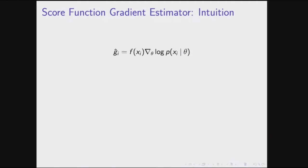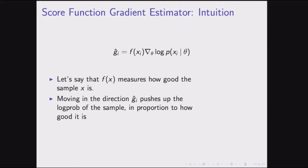Intuitively, f(x) measures how good sample x is. Our gradient estimator g-hat, computed from one sample x_i, pushes up the log probability of that sample in proportion to how good it is. If we got a really good function value, we try to push up its log probability a lot; if it was a bad function value, we don't push it up very much.